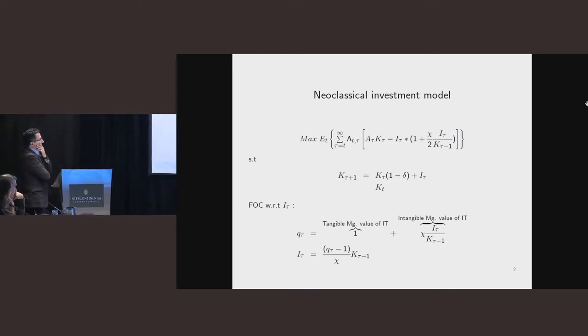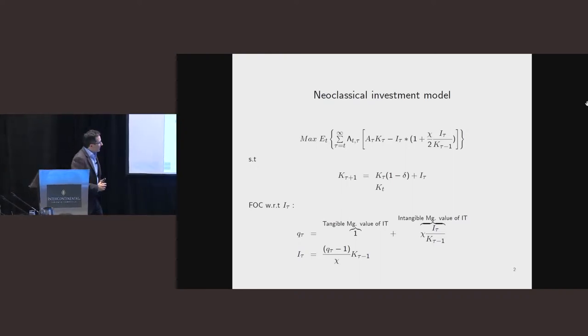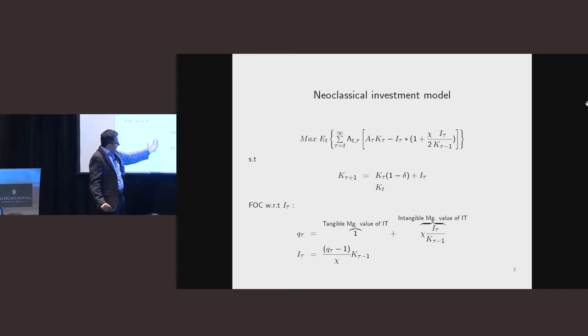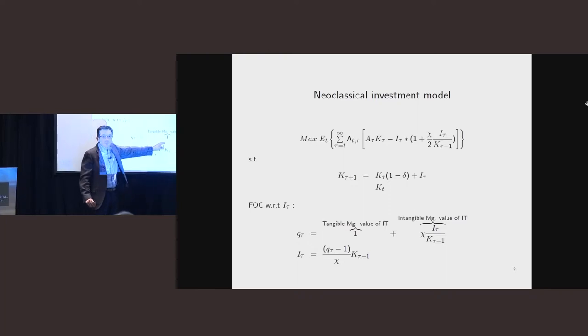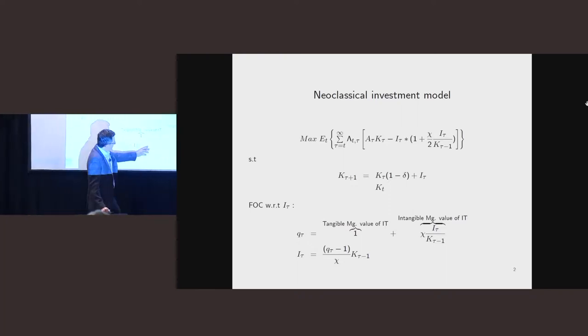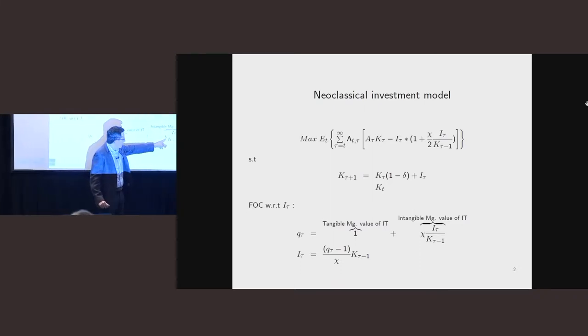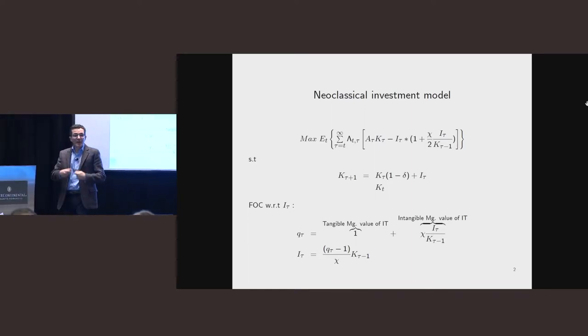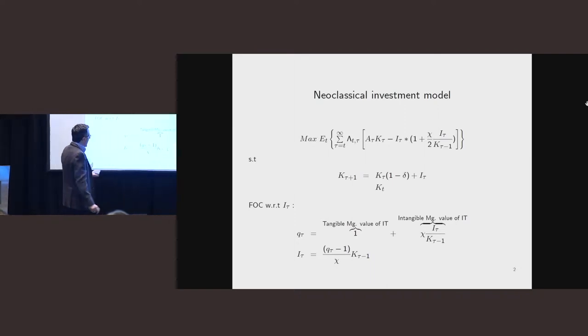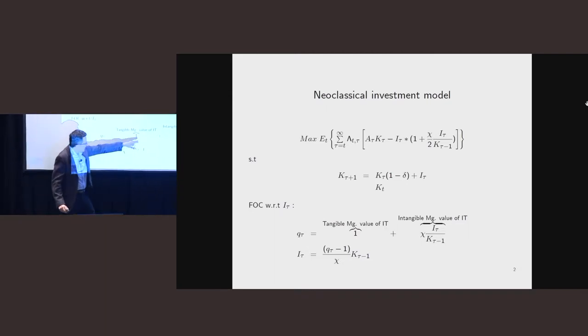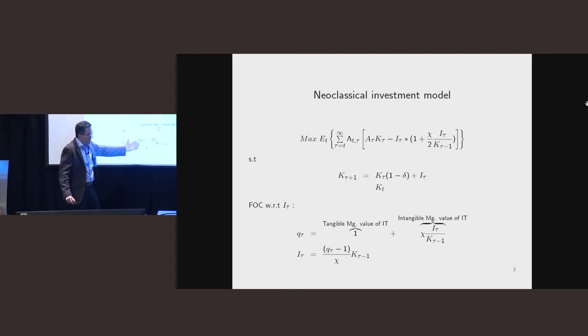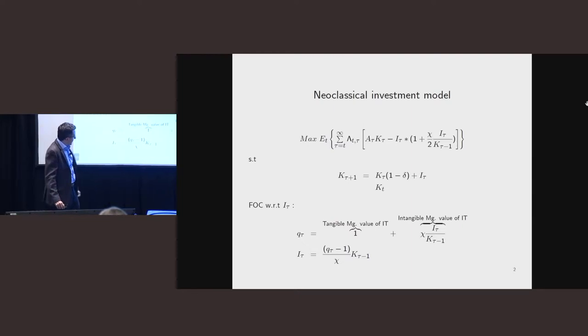And then you have this adjustment cost. This adjustment cost is basically a convex, a quadratic adjustment cost in the amount of investment that you make at each time tau. So here the notation tau is the running time, T is the beginning of time. And there's a law of motion for capital and an initial given level of capital. So then the first order condition with respect to investment says, look, give me the shadow value of a unit of capital. And that shadow value is going to have two components. One is the value of tangible capital, which is the cost of buying the machine, it's one. And the other is the intangible value, which is the cost of installing the machine. And that intangible value is driven by this adjustment cost chi, and is driven by how much investment I'm making.